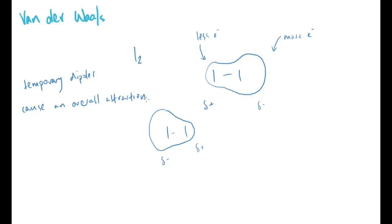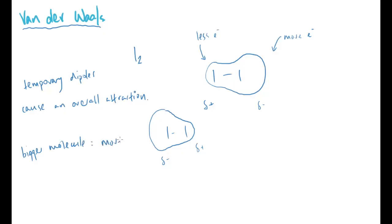The overall switching of where electrons are within the molecule means molecules may be attracted to each other due to opposing charges — delta positive attracted to delta negative — going through the whole group of molecules. Importantly, this Van der Waals force changes in strength depending on the size of the molecule and the number of electrons present. A bigger molecule has more electrons, leading to stronger Van der Waals forces; a smaller molecule has fewer electrons and therefore weaker forces.